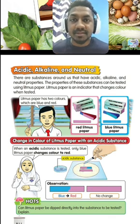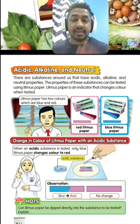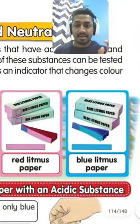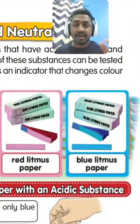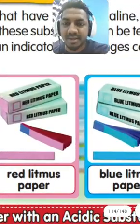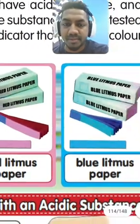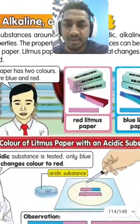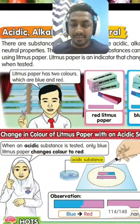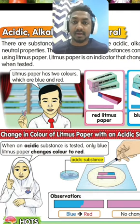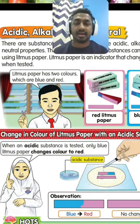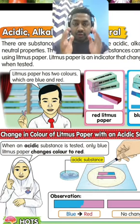You can test substances using litmus paper. There are two types of litmus paper — red litmus paper and blue litmus paper. Look at the picture here: red litmus paper and blue litmus paper. When an acidic substance is tested, only the blue litmus paper changes color to red.